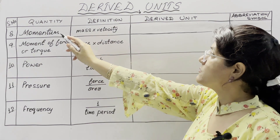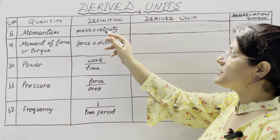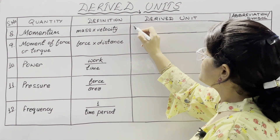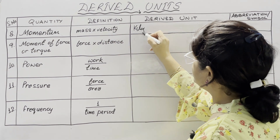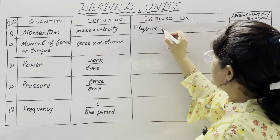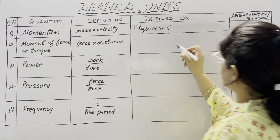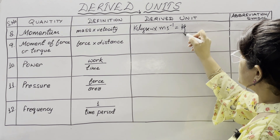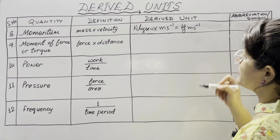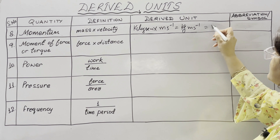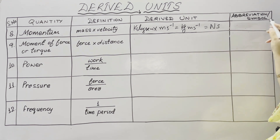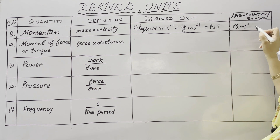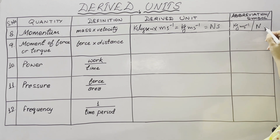The next physical quantity is momentum, and its definition is the product of mass and velocity. The unit of mass is kilogram and the unit of velocity is meter per second, so the unit of momentum is kg meter per second. You can also write it as newton second.